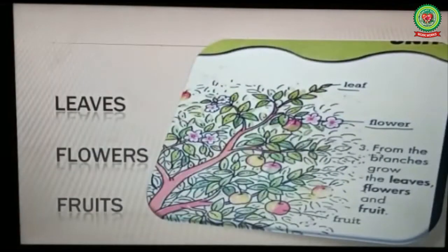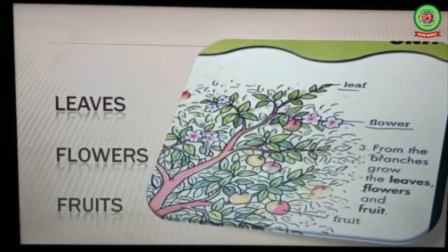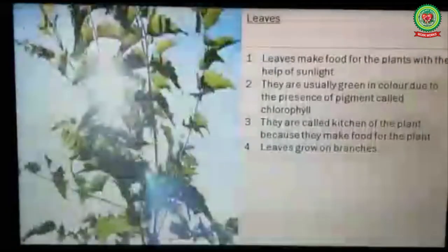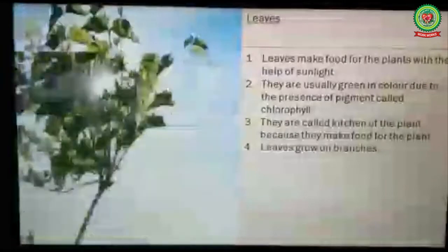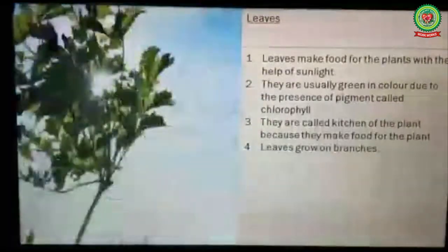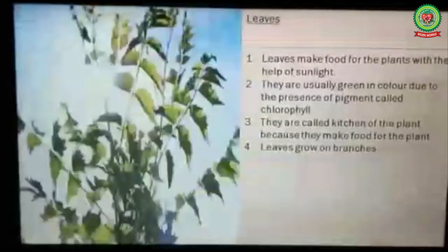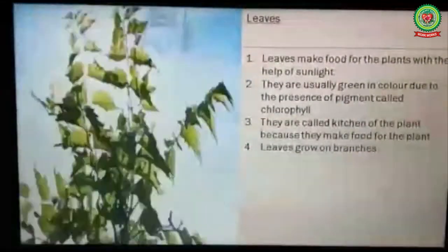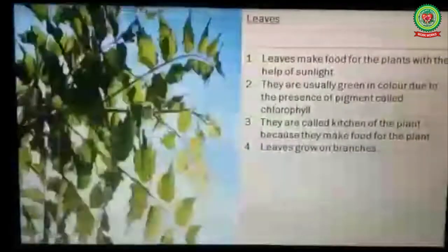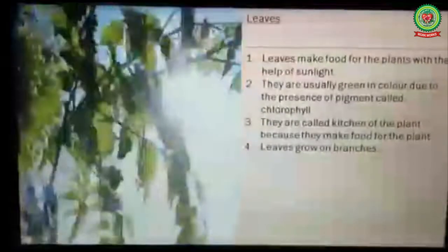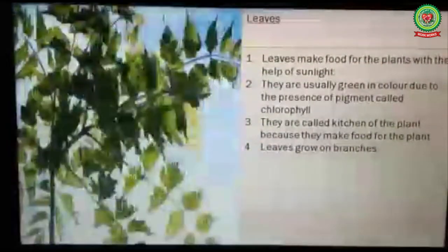As you can see in this picture, on the branches grow leaves, flowers, and fruits. Now let us discuss these parts of plants in detail. Leaves make food for the plant with the help of sunlight. They are usually green in color due to the presence of a pigment called chlorophyll.